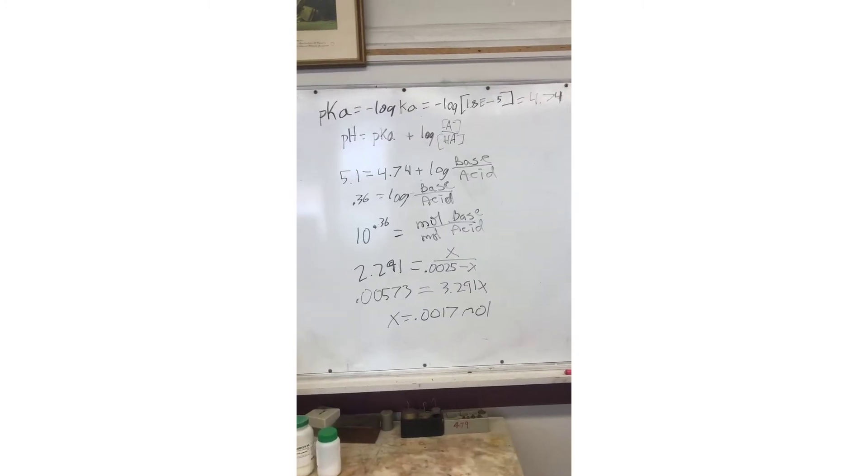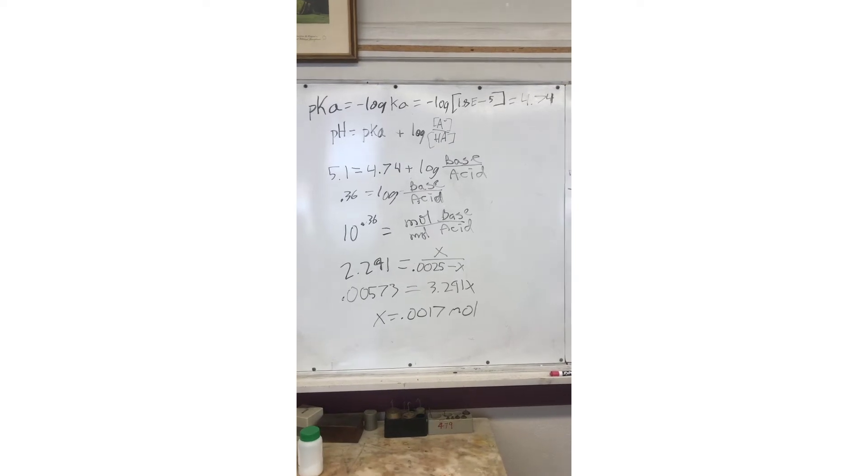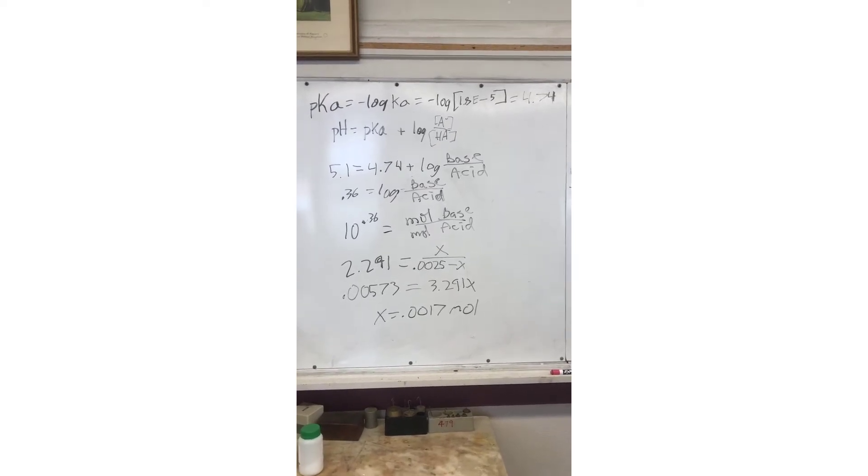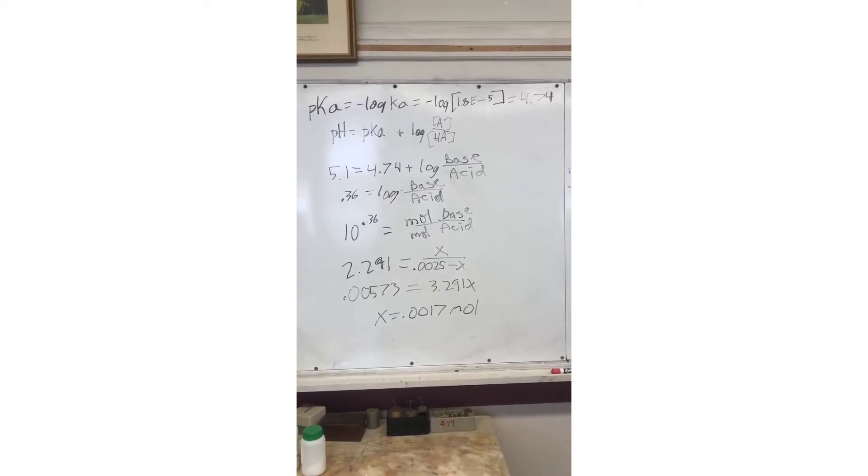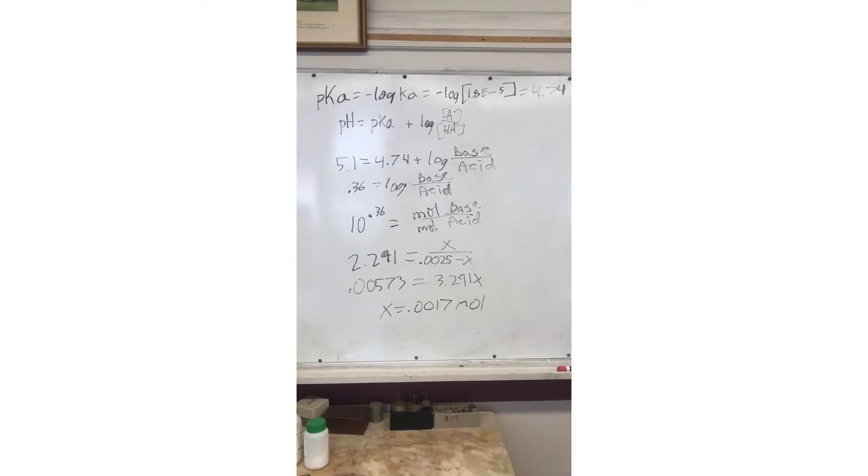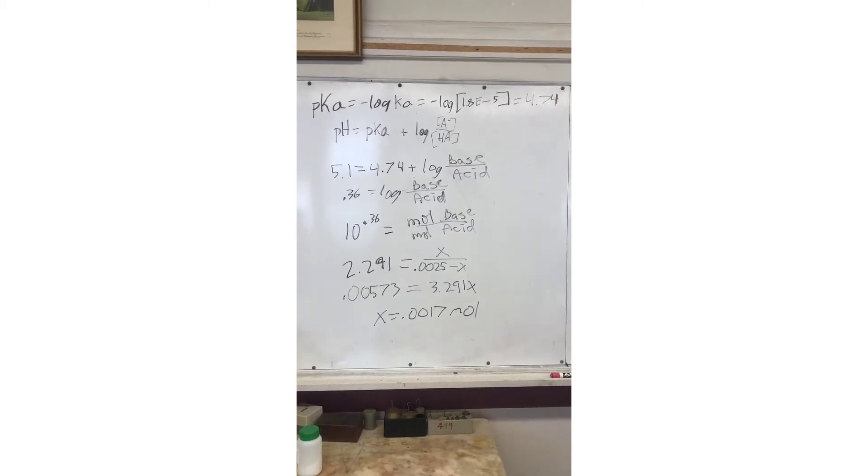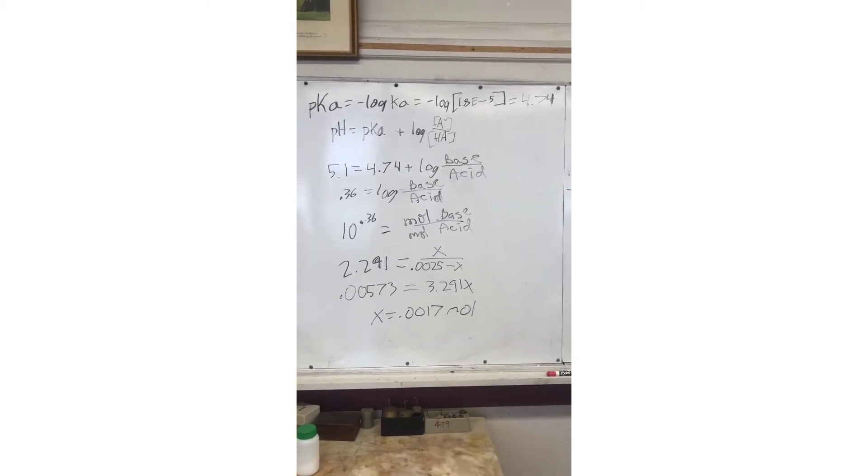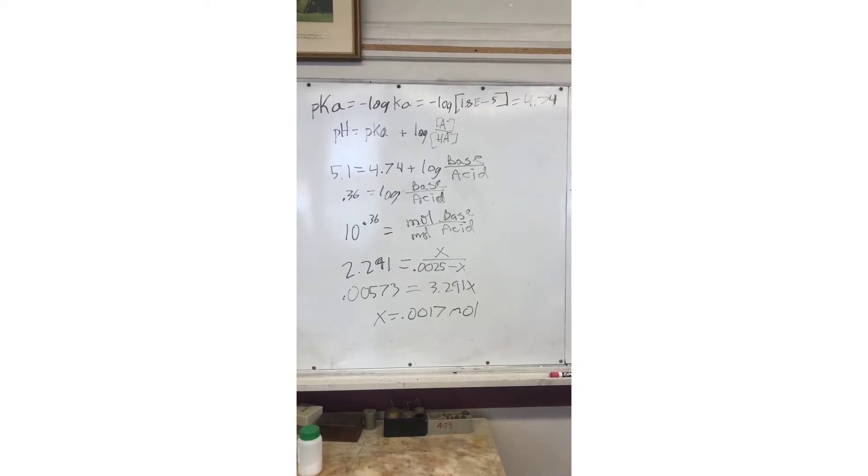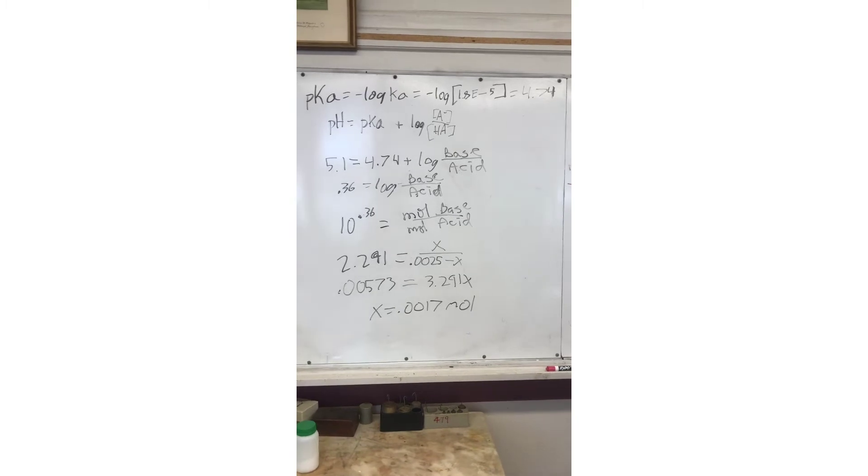The next step in preparing our acetate buffer is to determine how many moles of sodium hydroxide base are going to be necessary for our reaction. We're going to use the Henderson-Hasselbalch formula to find the number of moles. We use the formula pKa equals the negative log of the Ka. For this equation, we take the negative log of the Ka of acetic acid, which is 1.8e to the negative 5, and we find that the pKa equals 4.74.